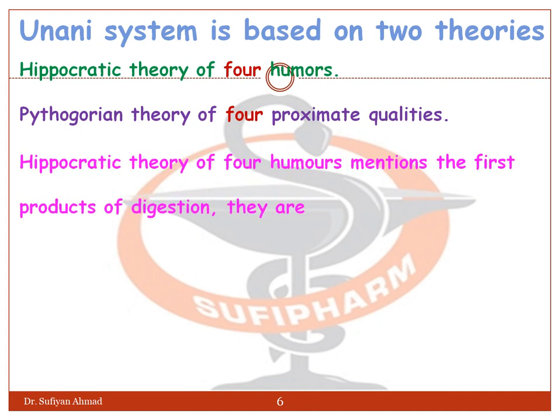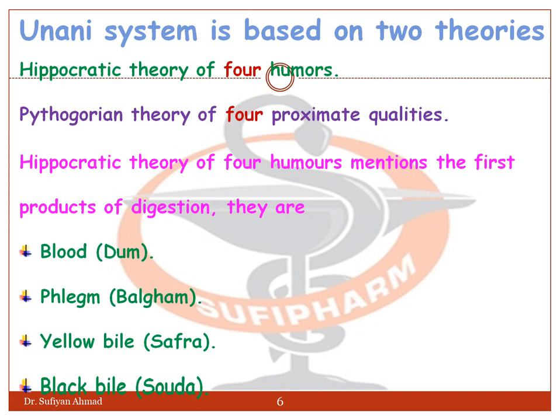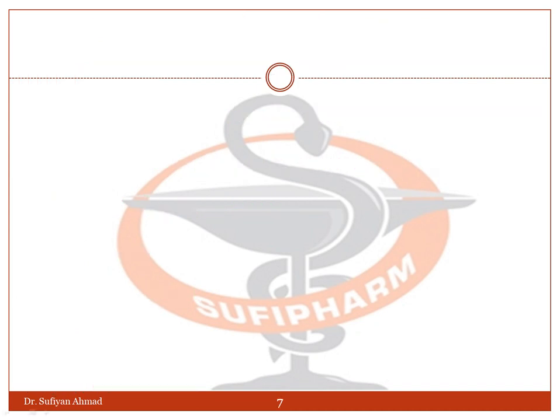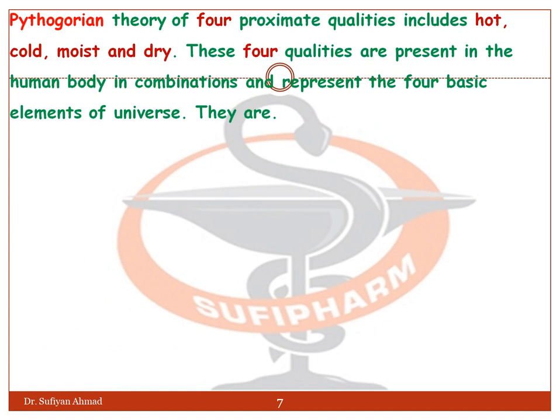The Hippocratic theory of the four humors mentions the first products of digestion. They are blood, phlegm, yellow bile, and black bile. The Pythagorean theory of four proximate qualities includes hot, cold, moist, and dry.